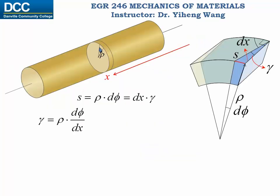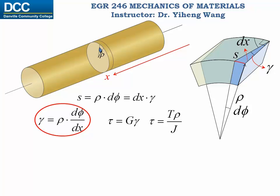If you still remember, when we were deriving the torsion formula we got to this step. Also, according to Hooke's law, tau equals G times gamma, where G is the modulus of rigidity — the material constant — and gamma is the shear strain. We also know the torsion formula: tau equals T, the internal torsional moment, times rho, the radial position, over J, the polar moment of inertia of the entire cross-sectional area.